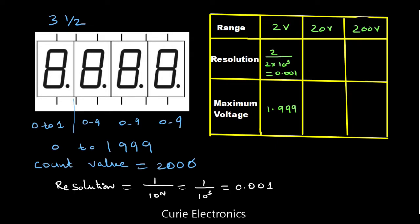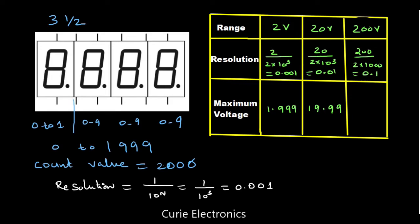The 1 in 1.999 is coming from our half digit. For the 20 volt range, 20 upon 2 multiplied by 10 to the power 3 — the resolution comes to 0.01, and the maximum voltage is 19.99 volt. For the 200 volt range, 200 upon 2 multiplied by 1000 equals 0.1 resolution, and it can measure up to 199.9 volt.